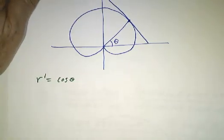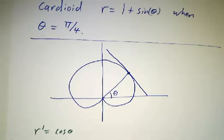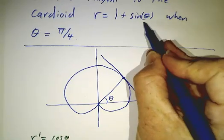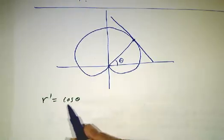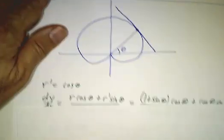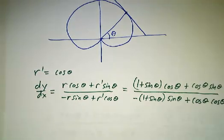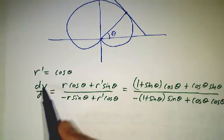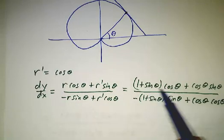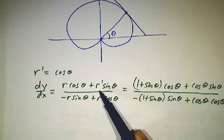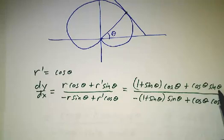Again, it's just plug and chug. r is 1 plus sin θ. The derivative of that is r' is cos θ. And then we just plug and chug. dy/dx, here's our formula. r is 1 plus sin θ times cos θ. r' is cos θ times sin θ. We collect terms.